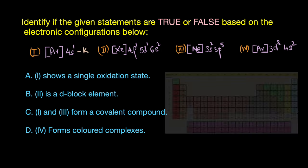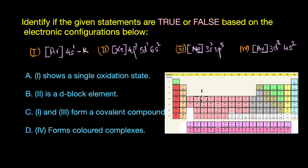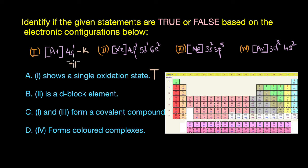Looking at the periodic table, Ar 4s1 refers to potassium. The first statement says element 1 shows a single oxidation state — this is true. Potassium shows a single oxidation state of +1 because it easily loses its 4s1 electron to achieve the stable noble gas configuration of argon. The second statement says element 2 is a d-block element.